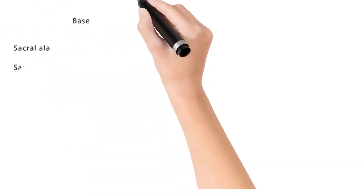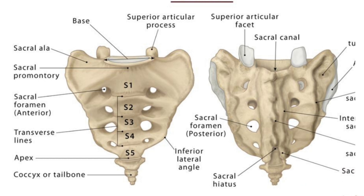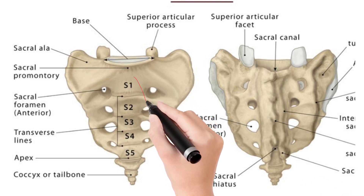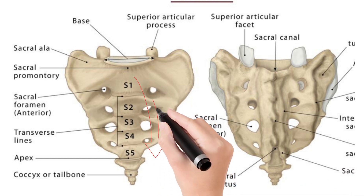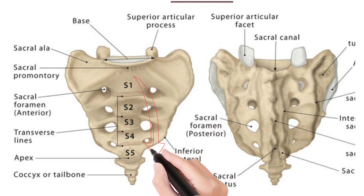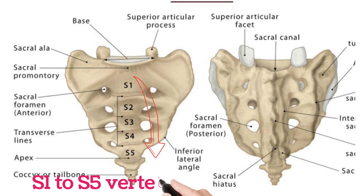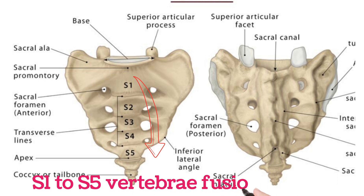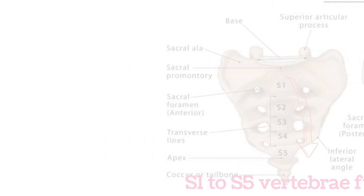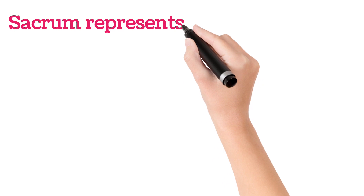There are two aspects: one is anterior and another one is posterior. On the anterior side, you can see that there are S1 to S5 — five vertebrae fused together. This fusion is an important feature of the sacrum.